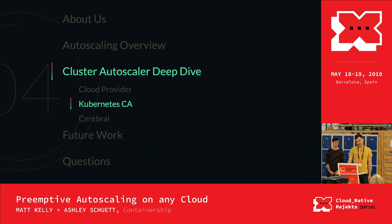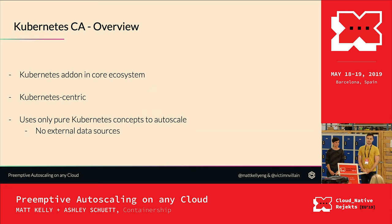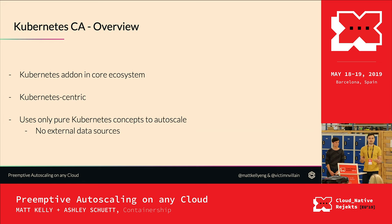The Kubernetes cluster autoscaler is basically an add-on in the core ecosystem — for example, if you provision a cluster using kops, you can choose it as an add-on. It's totally Kubernetes-centric, meaning it uses only pure Kubernetes concepts and resources to make autoscaling decisions. There are no external data sources — you can't pull metrics from Prometheus and autoscale on that. Purely Kubernetes concepts.